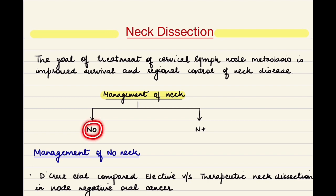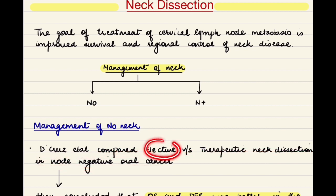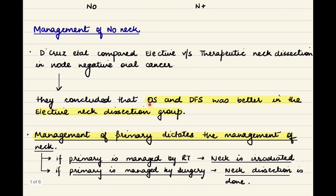In management of the N0 neck, earlier there was controversy about whether neck dissection should be done in N0 cases. To answer this question, Dr. De Cruz et al. compared elective versus therapeutic neck dissection in node-negative oral cancer. Elective neck dissection meant the neck was addressed at the time of primary cancer surgery, whereas therapeutic neck dissection was when they waited for the presence of cervical nodal metastasis later. On comparison, they concluded that overall survival and disease-free survival was better in the elective neck dissection group, and recommended neck dissection be done electively in all node-negative oral cancers.